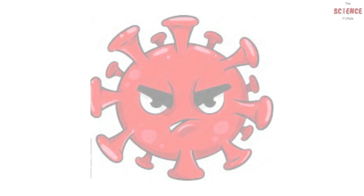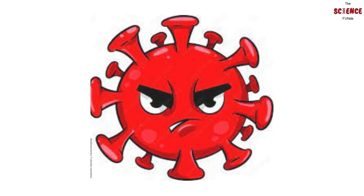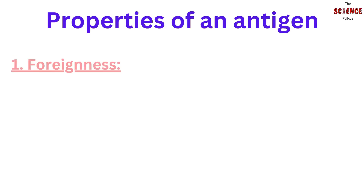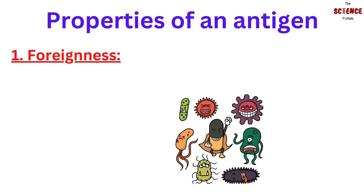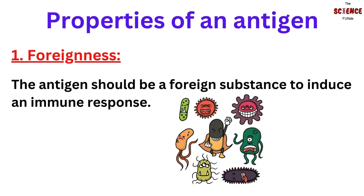There are different properties of antigens that make foreign particles act as antigens. The first property is foreignness. The antigen should be a foreign substance to induce an immune response. The defense cells of the body normally do not respond to its own molecules or self-antigens. In general, the antigenicity of a substance is related to the degree of its foreignness.